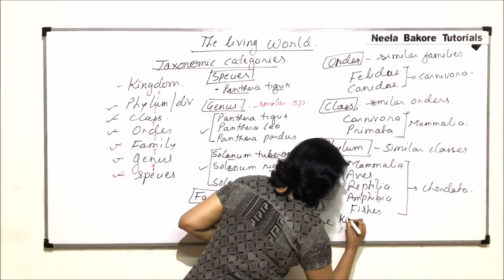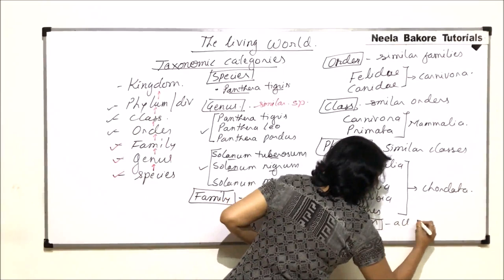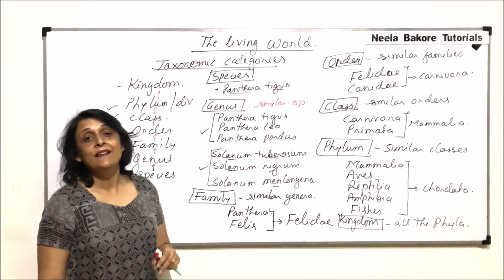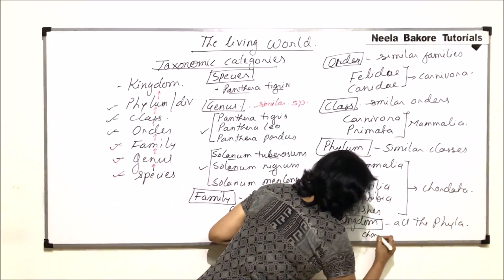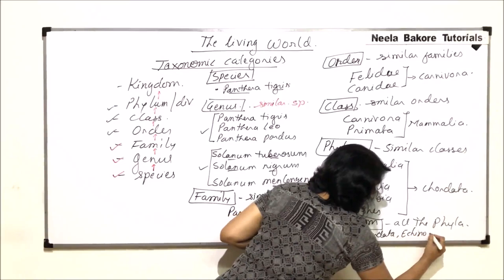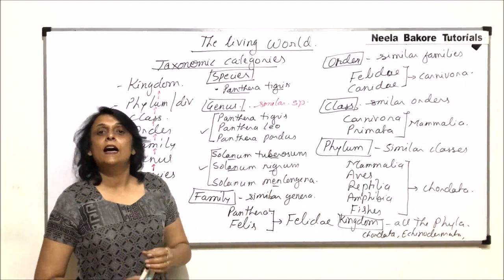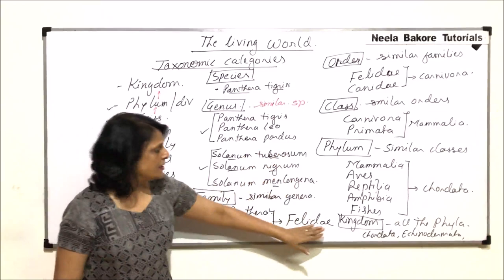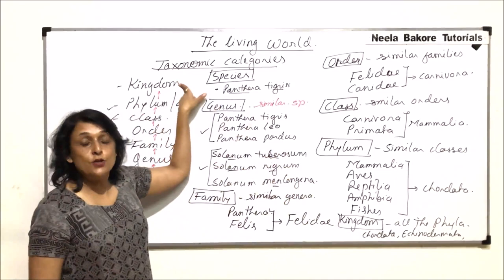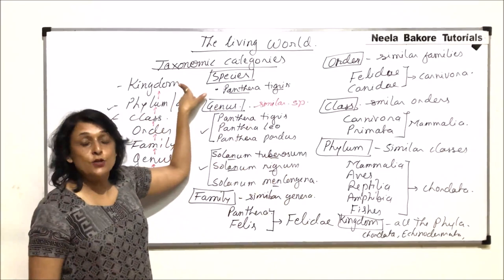The last and the topmost category is the kingdom. Kingdom is going to have all the phyla. All phyla would be placed in the kingdom. So, Chordata, Echinodermata, Mollusca, Annelida, Porifera, Cnidaria, Platyhelminthes, Aschelminthes — all those phyla would be placed in the kingdom. When we talk of animal kingdom, all animals that exist are in this group.